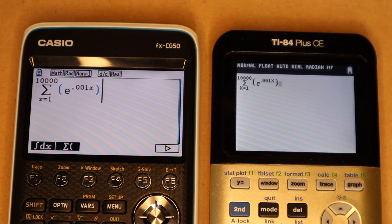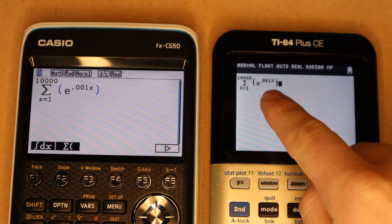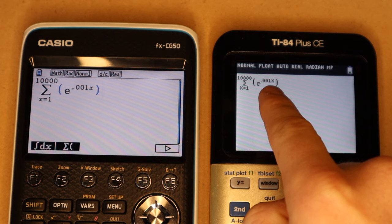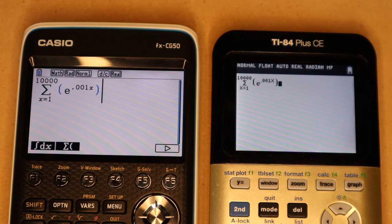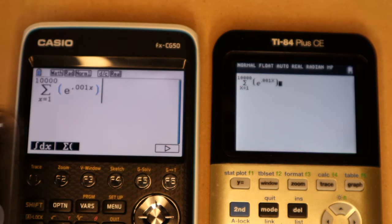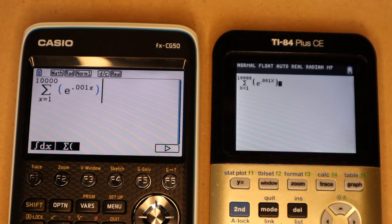Okay, this next test is probably going to take quite a bit longer, so I'm just going to skip to the results. But this is the sum of E to the 0.001X, where X is going from 1 to 10,000. And I have my phone here. I'm going to time them, and I'm going to press Enter on both calculators right now.